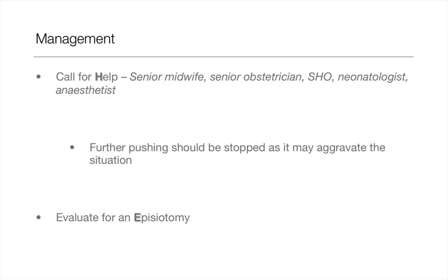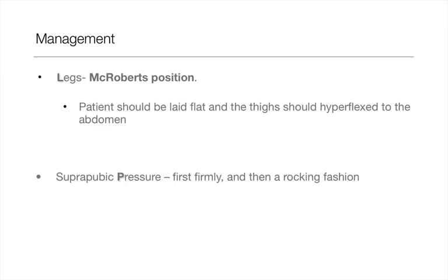At this point, evaluate for an episiotomy, because this may give you room later to do the internal manoeuvres. L is for Legs — this is called McRoberts position. The lady is laid flat and the thighs are hyperflexed to the abdomen. If this doesn't deliver the baby, then both the midwife and the obstetrician should put suprapubic pressure on the pelvis — first with the hands firmly down and then in a rocking fashion. The majority of shoulder dystocias are then delivered at this point.